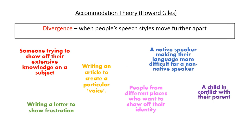Now let's have a quick look at divergence, when a speaker purposely makes their style of speech less like those they are with. From experience this seems to be a lot less regular than convergence. The first example is someone trying to show off their extensive knowledge on a subject — this may use divergence as someone uses purposely difficult lexis to either impress or confuse the person they are speaking to, perhaps to show a higher social status.